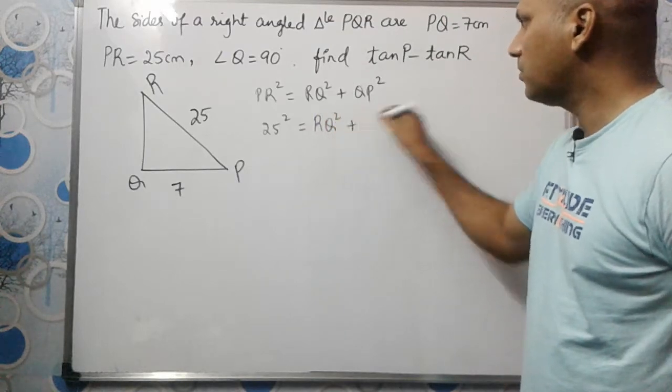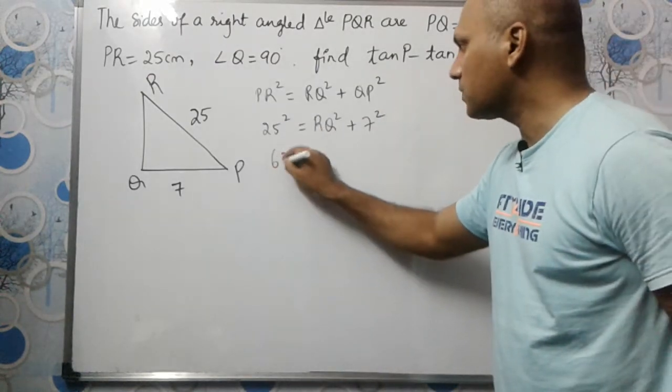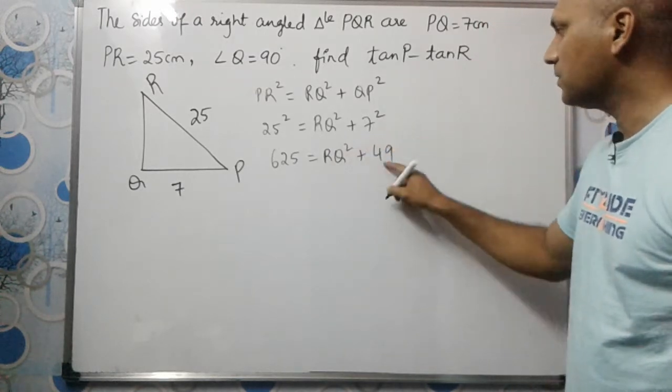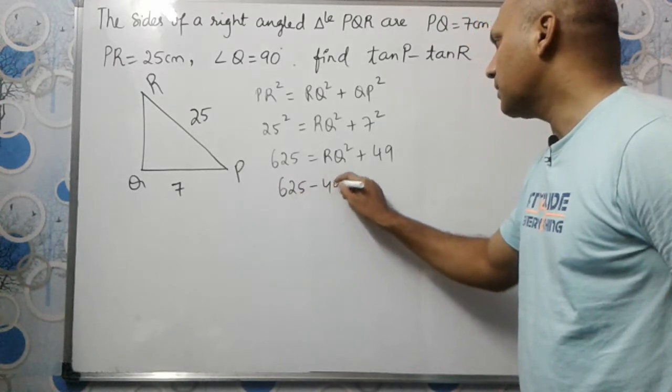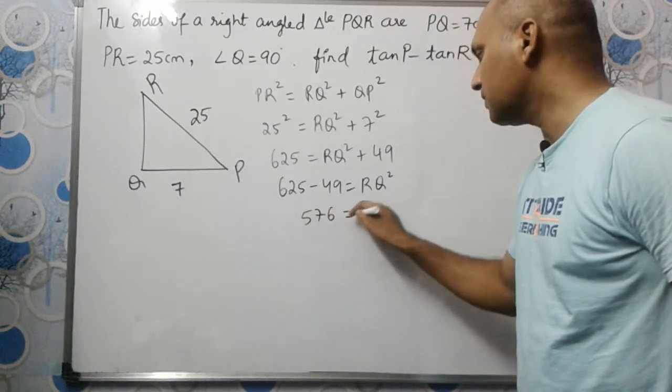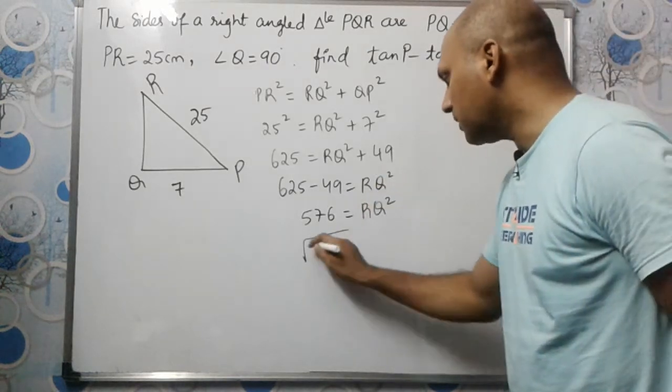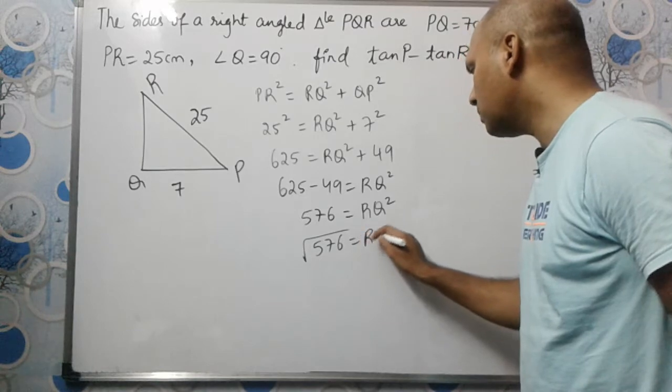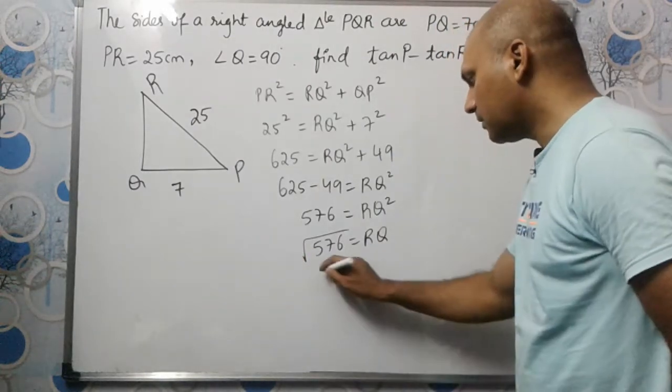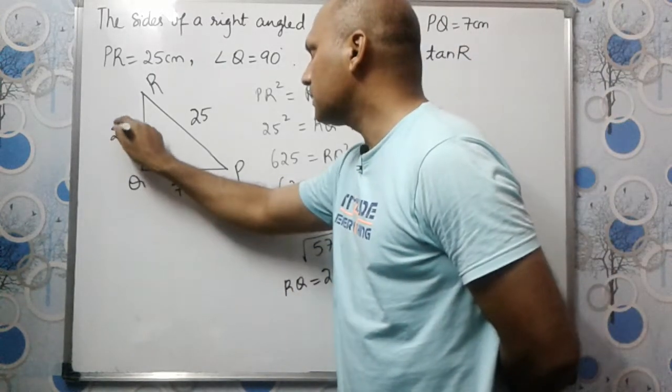So PR square is 25 square equal to RQ square plus 7 square. 25 square is 625 equal to RQ square plus 49. So this 49 goes on the other side, becomes minus. This is 576, so RQ square equals 576. RQ is root 576, which is 24. Hence RQ is 24 centimeters.